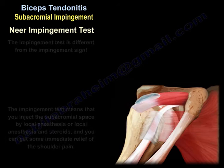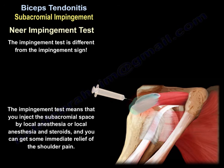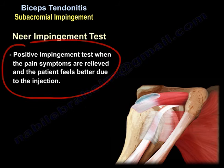How about the Neer impingement test? The impingement test is different from the impingement sign. The impingement test means you inject the subacromial space with local anesthesia, and the patient gets immediate relief of shoulder pain. That is a positive impingement test when the pain symptoms are relieved and the patient feels better due to the injection.